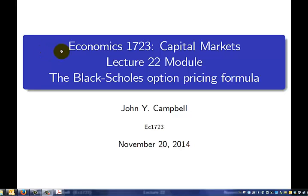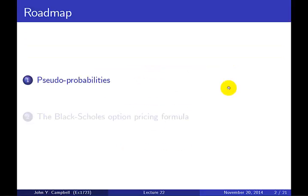Welcome to Economics 1723 Capital Markets. This is the online module for lecture 22 and we're going to discuss the Black-Scholes option pricing formula. I want to lead into that topic by talking about pseudo probabilities or risk-neutral probabilities, which are a general way of solving for option prices, and then we'll see how that applies to the famous Black-Scholes option pricing formula.